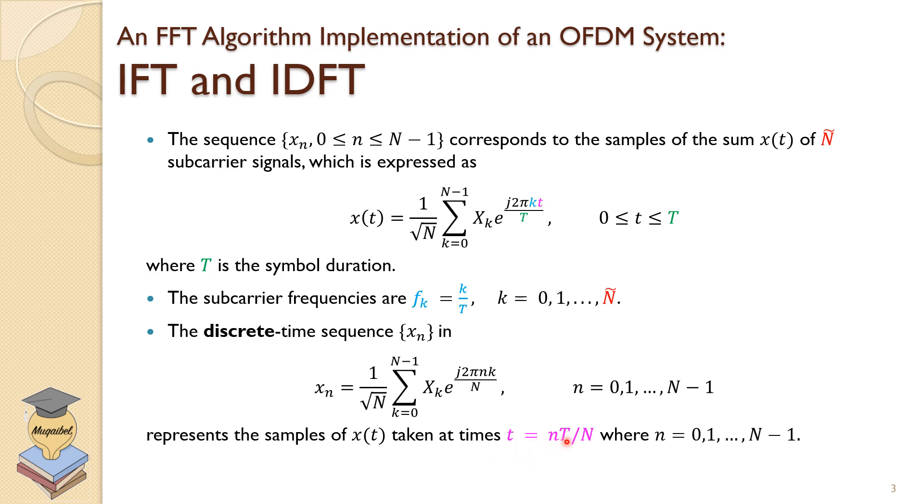If you take discrete values where time is equal to n times T divided by N—so representing the samples taken at times t equal to n times T over N—if you replace t, you will get the following representation. Replace t here with its equivalent; the capital T will cancel out and you get the following notation.